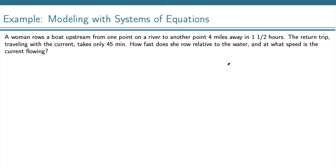We've got a couple things going on here. We'll be modeling this with a system of equations because there's multiple things we don't know, which are how fast she's rowing relative to the water and the speed of the current. There's two relationships that are occurring.